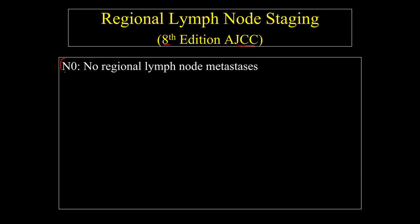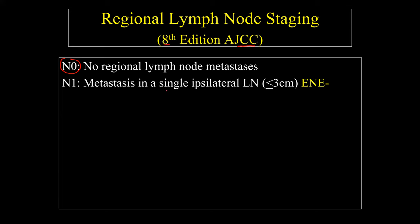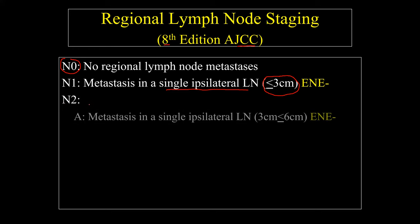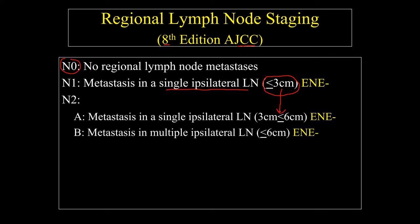This is the eighth edition of the AJCC staging system. N0 means no regional lymph node metastasis. N1 is a single ipsilateral lymph node less than 3 centimeters. N2A is that same node enlarged — still ipsilateral. N2B is multiple ipsilateral lymph nodes, all less than 6 centimeters. N2C means disease involving the opposite neck — contralateral involvement. N3 disease is any lymph node metastasis greater than 6 centimeters.